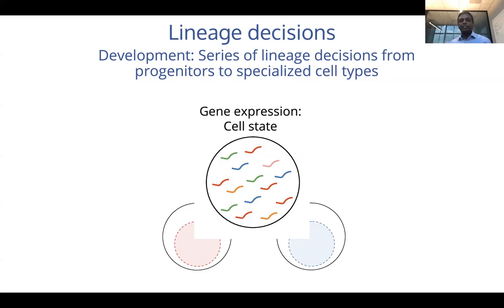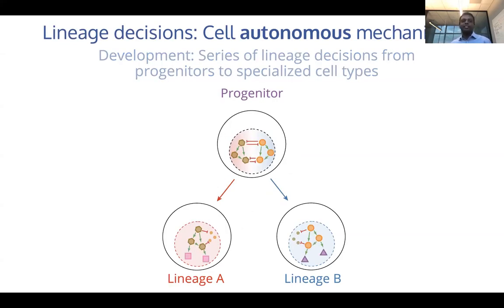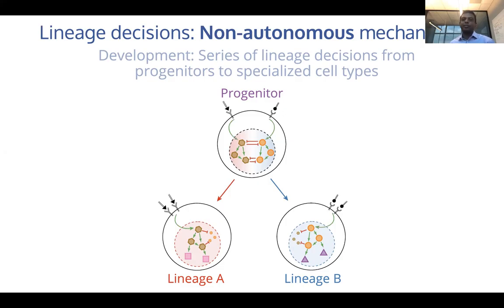With that abstraction, we can really go into mechanisms of how these lineage decisions are happening. At a gross level, we can think of two very different modes in which a cell decides to take one fate or another. One is cell autonomous mechanisms where control is an inherent property of the cell itself, coming through regulatory networks. The second is through non-autonomous or cell communication mechanisms where cells in individual neighborhoods or niches communicate with each other and respond to signals as they acquire one fate or the other.